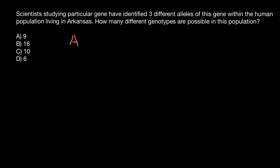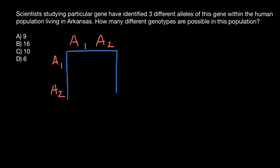Let's say one would be allele A1 and another allele would be A2 — just two alleles of gene A, slightly different forms of the same gene. This is what we call alleles. In order to find all the combinations we can get with just two alleles in a population, we have to build a simple Punnett square. Because we have only two alleles, our Punnett square is going to be two by two.